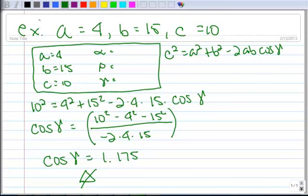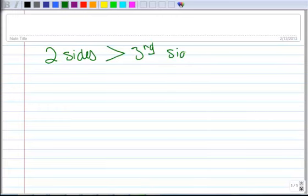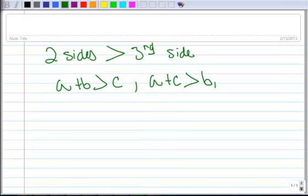All right, so let's talk about a rule. There's kind of a rule about these. So the rule is that two sides added together have to be greater than the third side. So that means that your A plus B has to be greater than C. Likewise, A plus C has got to be greater than B.